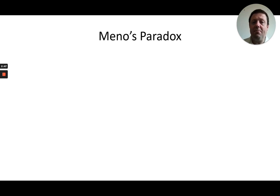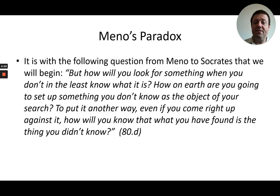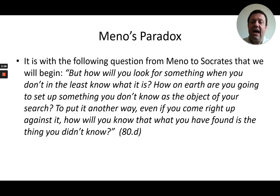For the purposes of the A-level, a good place to start is Meno's paradox. In the dialogue Meno, Meno puts the question to Socrates: how will you look for something when you don't, in the least, know what it is? How on earth are you going to set up something you don't know as the object of your search? Even if you come right up against it, how will you know that what you have found is the thing that you didn't know?